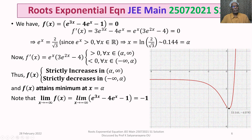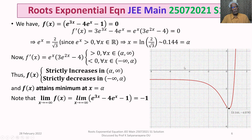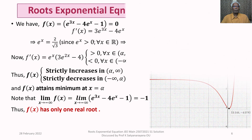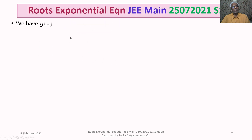Since f(x) takes the value -1 at x → -∞, attains its minimum at x = alpha, and then strictly increases on (alpha, ∞) crossing the x-axis, f(x) has exactly one real root.